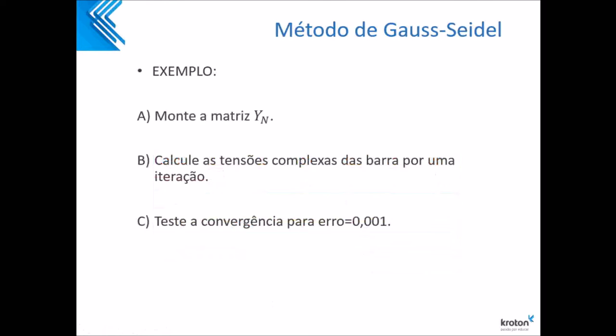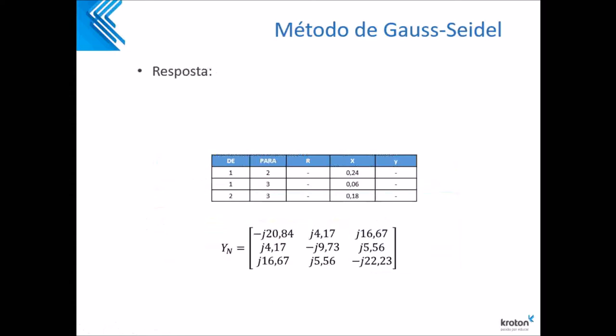Vamos lá para o próximo passo. B: você vai ter que calcular as tensões complexas das barras por uma iteração. E letra C: você vai ter que fazer o teste de convergência, que é o erro — que tem que ser menor ou igual a 0,001.